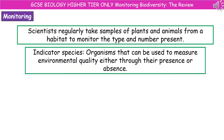For those of you doing higher biology, you need to know about how we monitor biodiversity. Scientists will regularly take samples of plants and animals from a habitat to monitor the type and number of them present. One of the key types of organisms they're looking for are indicator species, which are organisms that we can use to measure environmental quality, either through their presence or absence.